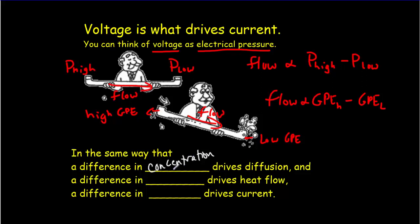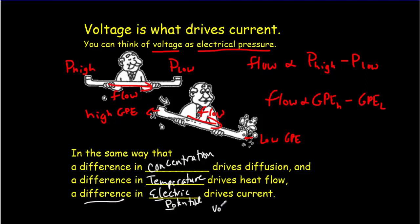Similarly, when we talked about thermal physics, whenever we had a difference in temperature that would cause heat to flow — a difference in temperature drives heat flow, and the higher the difference, the greater the heat flow. Similarly, a difference in electric potential — what we call the voltage — drives current. So voltage drives current.